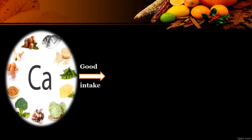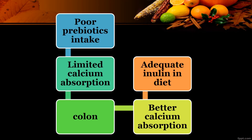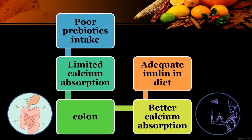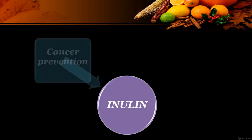These colon adenoma cells are often seen in elders, resembling cancer cells. Dietary calcium has an important role in bone metabolism and bone health; any deficiency will decrease bone mass, resulting in osteoporosis. If your diet has poor prebiotics, there will be limited absorption of calcium in the colon.